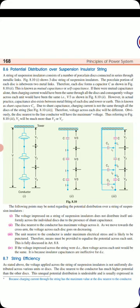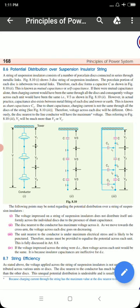A current I flows from the conductor to the tower. However, in actual practice, capacitance also exists between the metal fittings of each disk and the tower. This is called shunt capacitance C1. Due to this, shunt currents i1, i2, i3 flow through the shunt capacitors, and C1 is also referred to as mutual capacitance in this context.